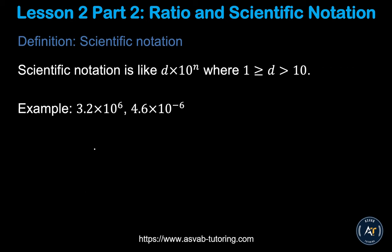The next topic is scientific notation. We deal with very large numbers in science, and scientific notation is a handy short form for writing them. You write a number in the form: a number times 10 to some exponent. For example, 3.2 times 10 to the power 6, or 4.6 times 10 to the power negative 6.